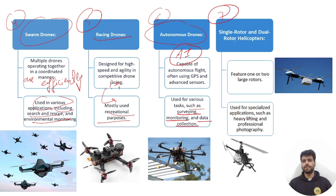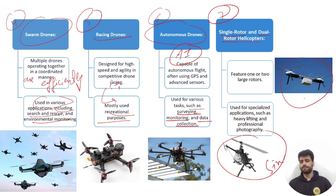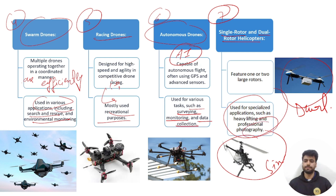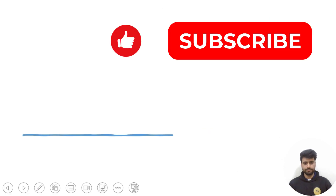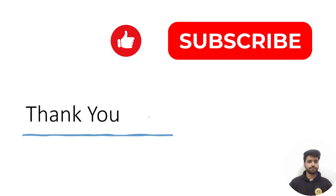The seventh type is single rotor and dual rotor helicopters. They are used for heavy lifting and professional photography. Thank you.